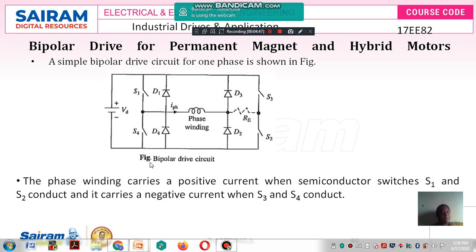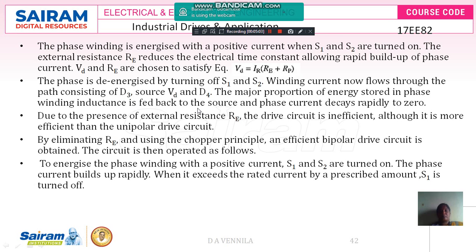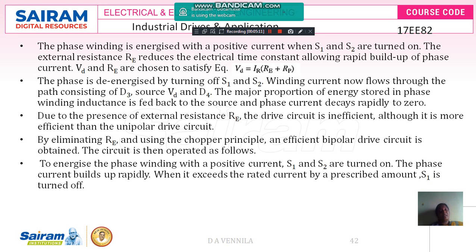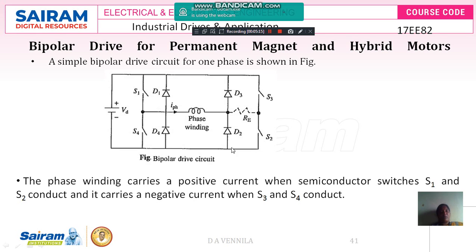The source and phase current decay rapidly to zero. Due to the presence of the external resistance RE, the drive circuit is inefficient. Although it is more efficient than the unipolar drive circuit — RE causes inefficiency in the unipolar — in bipolar, when compared to unipolar, it is more efficient.